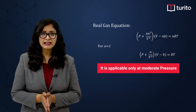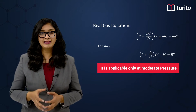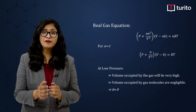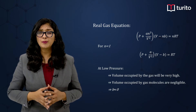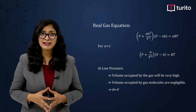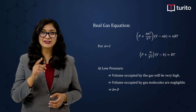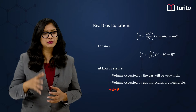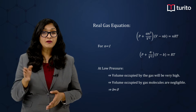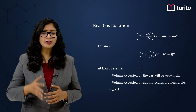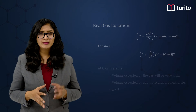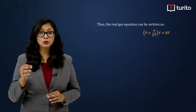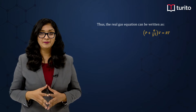Let us see the condition where Z is less than 1. At low pressure, the volume occupied by the gases will be very high. If the volume occupied by the gas is very high, we can ignore the volume occupied by the gaseous molecules — that means b can be considered very close to zero. So we can remove b from the real gas equation. The equation then becomes: (P + a/V²) × V = RT.